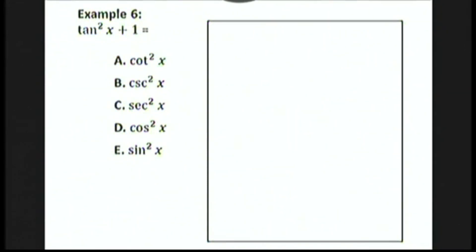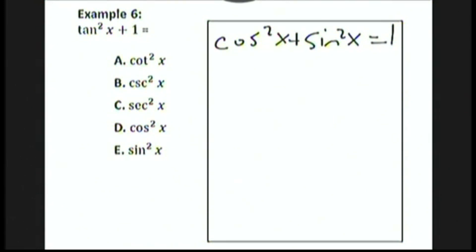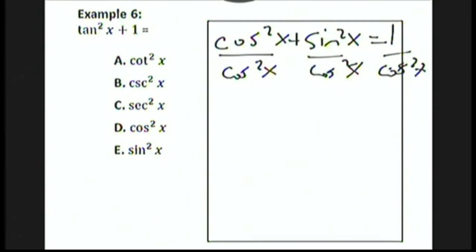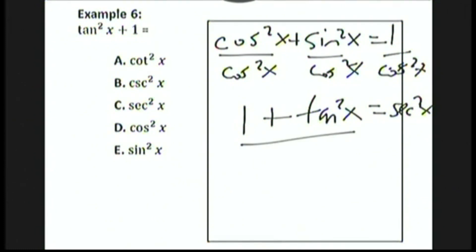Let's look at another example. Tan squared x plus 1 is equal to what? This involves a second Pythagorean identity. I usually don't memorize that second one — it's easy to derive from the first by dividing through by cosine squared x. Cosine squared x over cosine squared x is 1, sine squared x over cosine squared x is tan squared x, and 1 over cosine squared x is secant squared x. So 1 plus tan squared x equals tan squared x plus 1, which equals secant squared x — choice C.